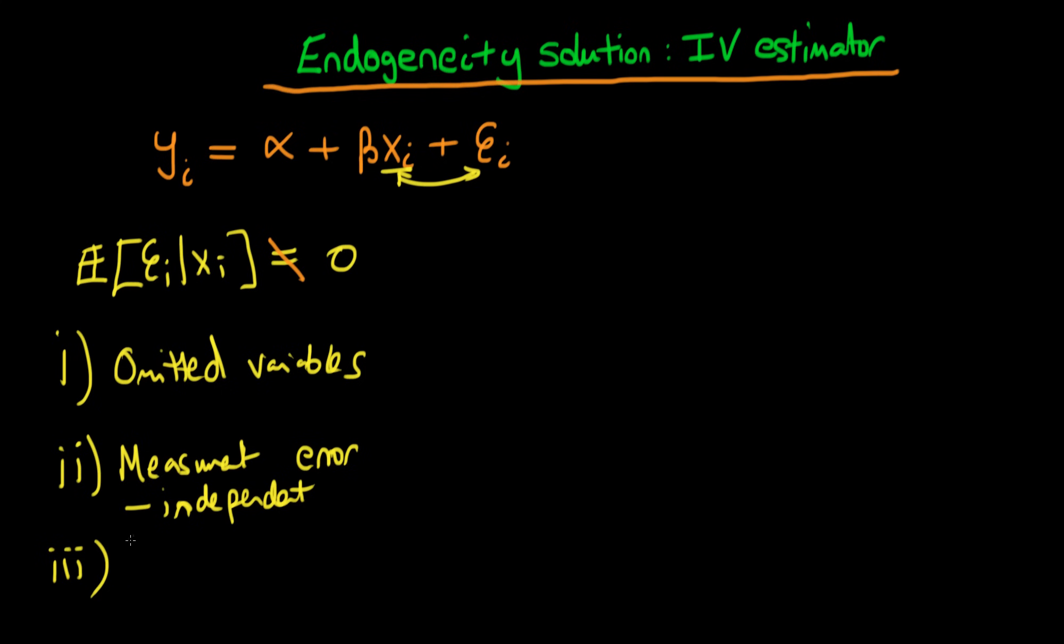The third and final way for cross-sectional models that we can have some sort of violation of this Gauss-Markov condition, and hence have endogenous errors, is if we have reverse causality.